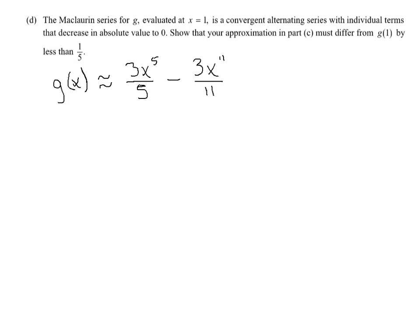Okay, part D, they said that this Maclaurin series g evaluated at one, which is what we did back there in C, is a convergent alternating series with individual terms that decrease in absolute value to zero. Now, that may sound rather strange and we've never worded it quite like that, but remember we said, in order to prove that an alternating series converged, and we'll just recall the alternating series test here, we said that the limit as n approached infinity of the absolute value of a_n had to be equal to zero. And basically, if that was true, the alternating series would converge. Basically, that's what they're saying up here in that sentence. They're just putting it into words and they're saying that the individual terms decrease in absolute value all the way to zero.